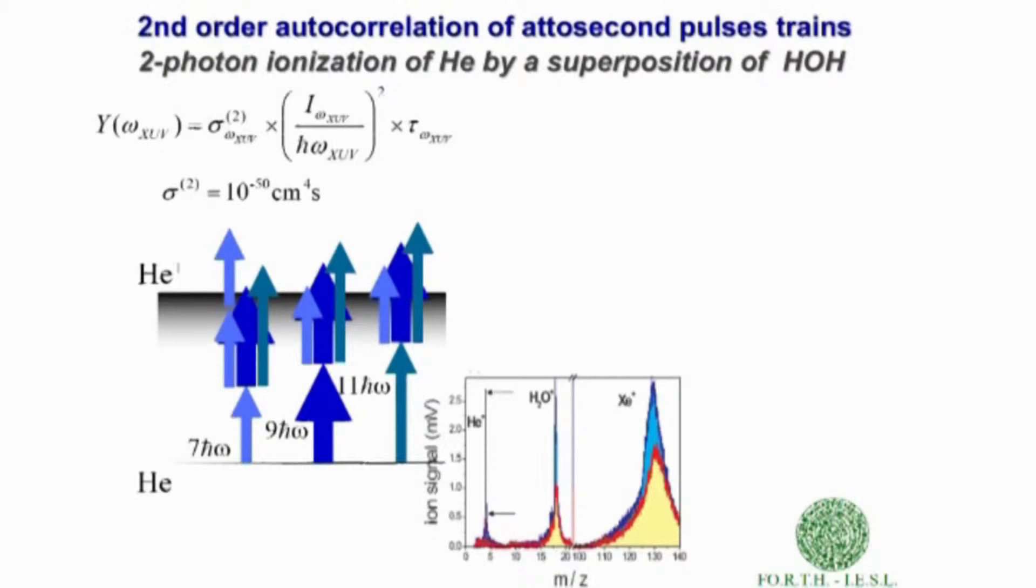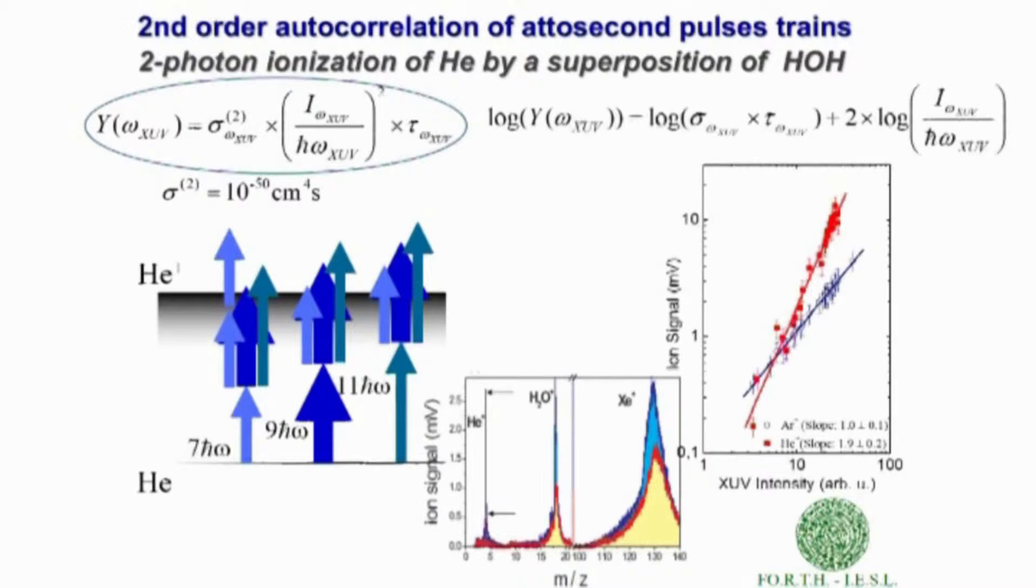A verification of this is given by the dependence of the ion yield on the XUV intensity. Starting from this equation, taking the log of the ion yield, we see that it is proportional to the log of the ionizing XUV intensity. The proportionality factor is two for a two-photon ionization process.